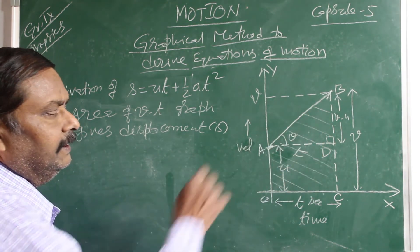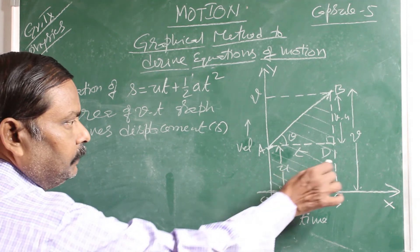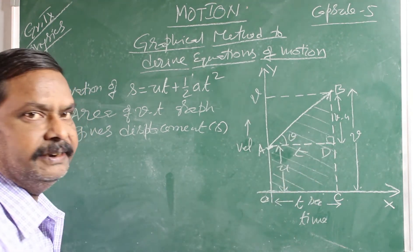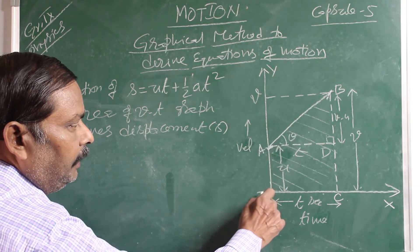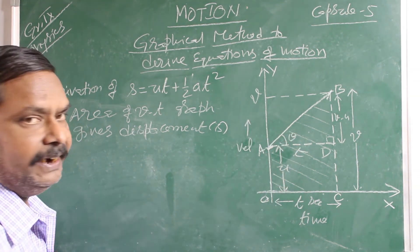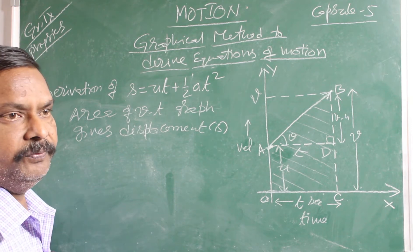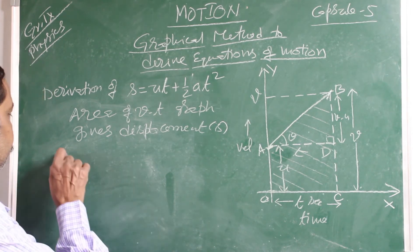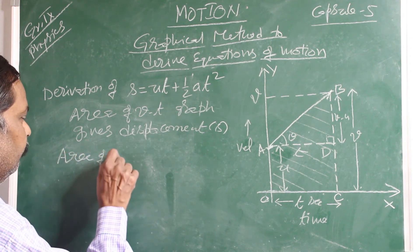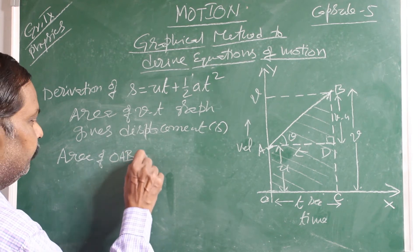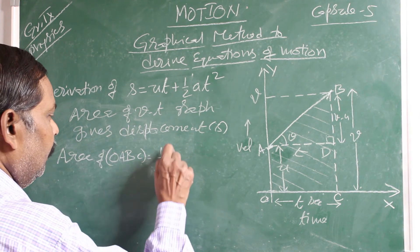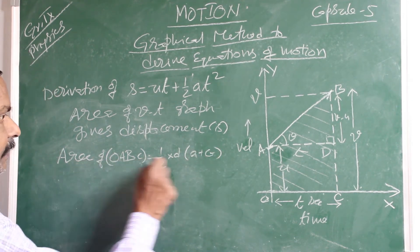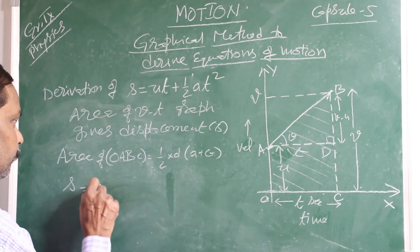The area of the VT graph is in the shape of a trapezium. OA and BC are parallel lines, and AD is the distance between the two parallel lines. AB and OC are non-parallel sides. So this total quadrilateral is in the shape of a trapezium. The area of a trapezium is half the distance between the parallel sides multiplied by the sum of the two parallel sides. So the area of OABC equals ½ × distance between parallel sides × sum of parallel sides, and this area gives displacement S.